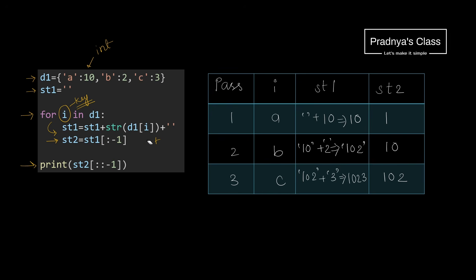And in the final print statement, we are reversing the st2 string. Let's check out the values in each pass. In pass 1, the key will be 'a', so d1['a'] is nothing but 10. It will get concatenated with the empty string followed by that empty string again. Finally we get the string '10'. And in st2, we are removing the last character of st1, so after removing the last character, we get '1'.